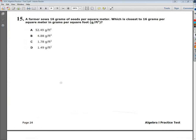The question says a farmer sows 16 grams of seeds per square meter. What is the closest to 16 grams per square meter in grams per square foot? The thing here is we're dealing with square units, which isn't really that complicated.